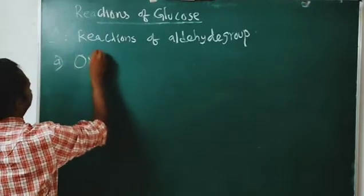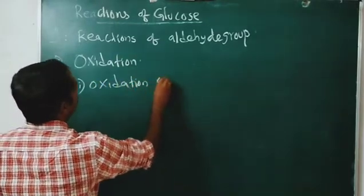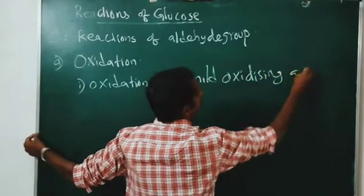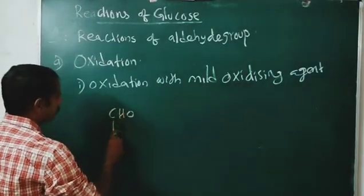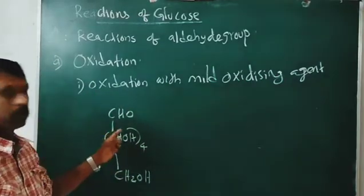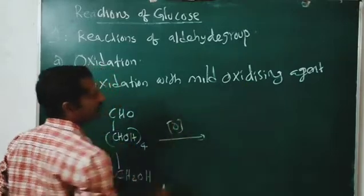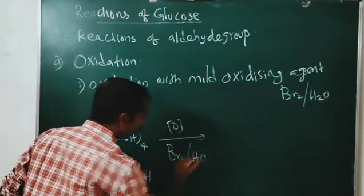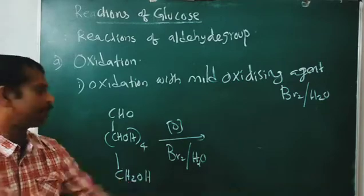Oxidation. One: oxidation with a mild oxidizing agent, like bromine water. Look at here: CHO, CHOH four times, CH2OH — this is glucose. When oxidized with mild oxidizing agent like bromine water (Br2/H2O), only the CHO group will be oxidized to the corresponding carboxylic acid group.